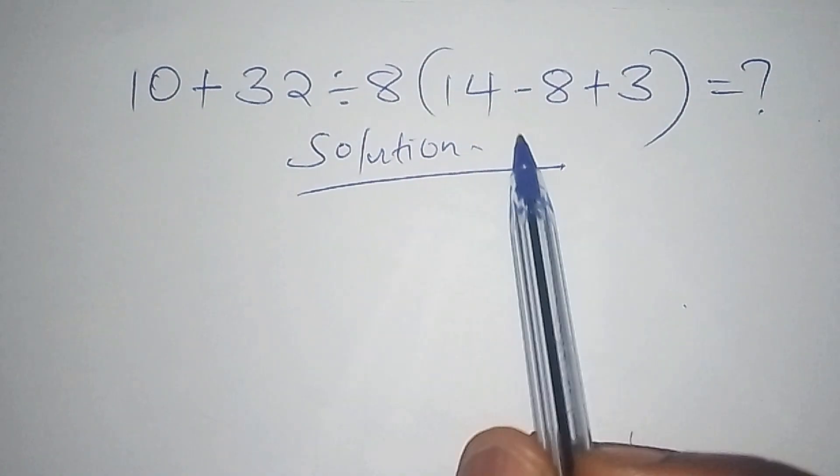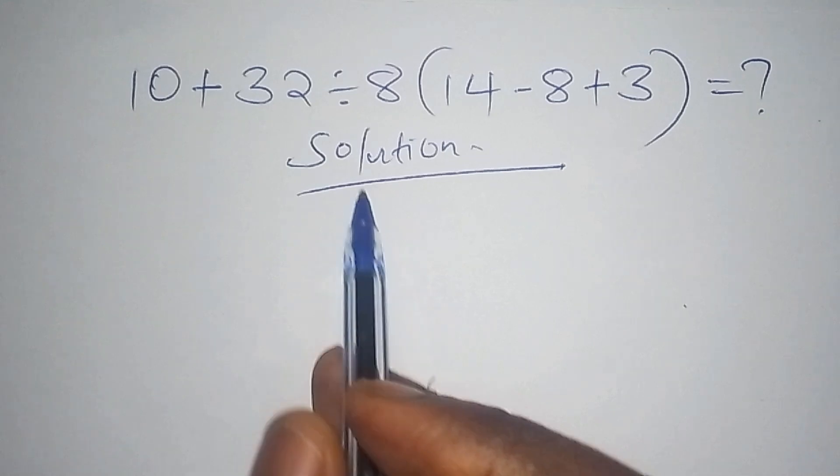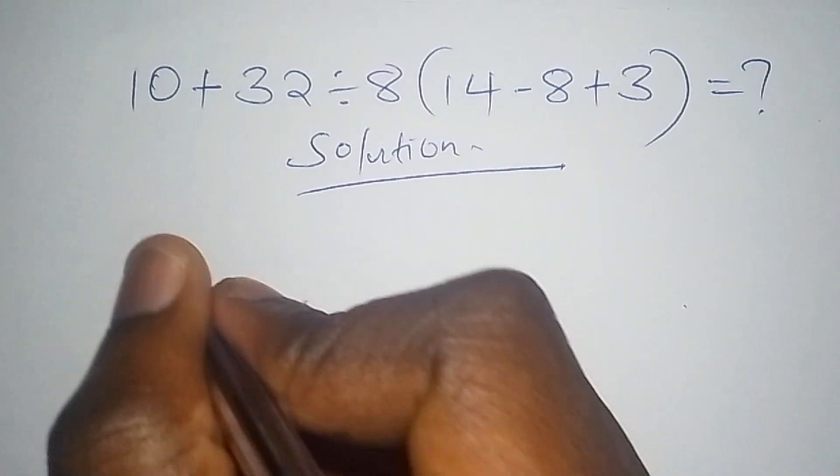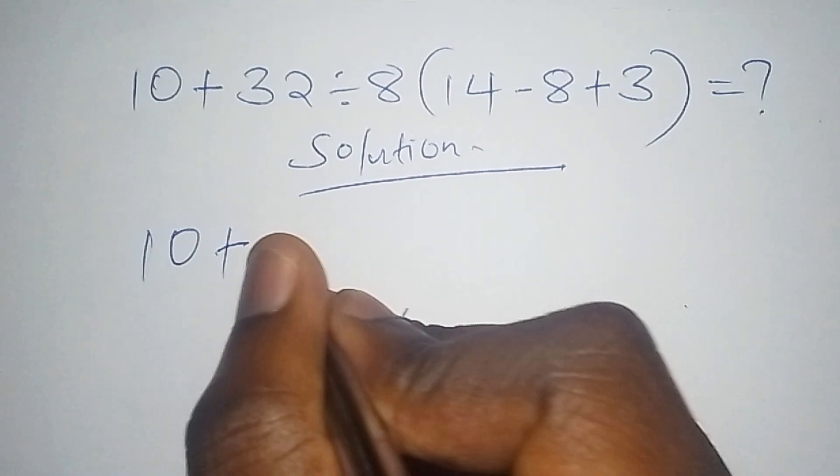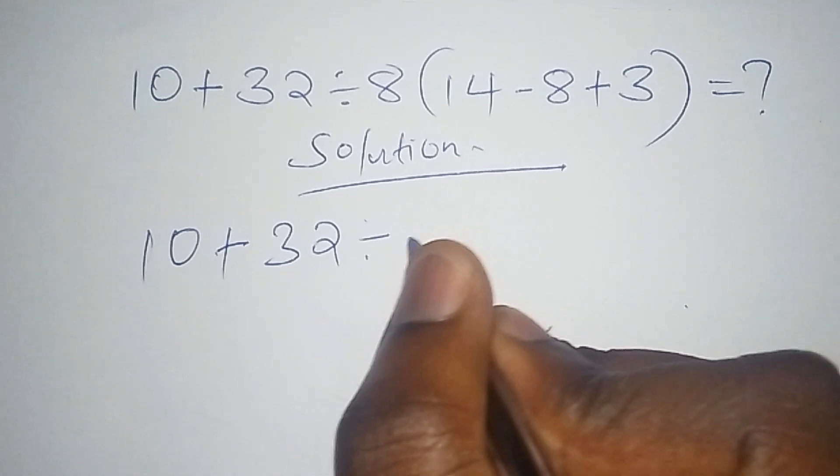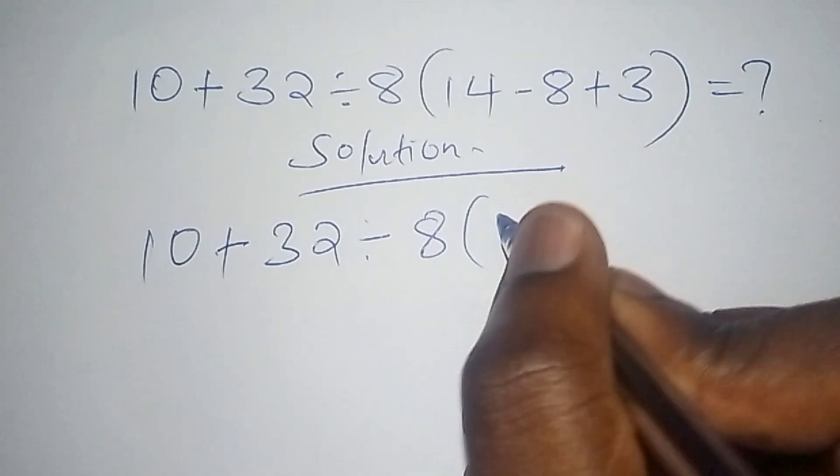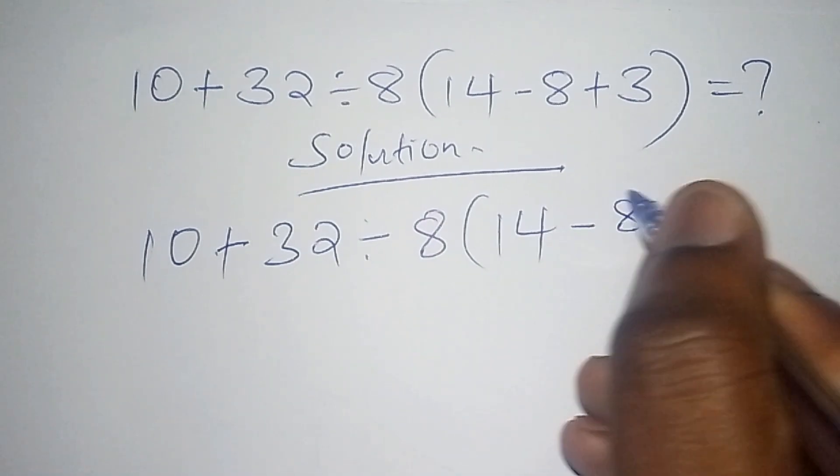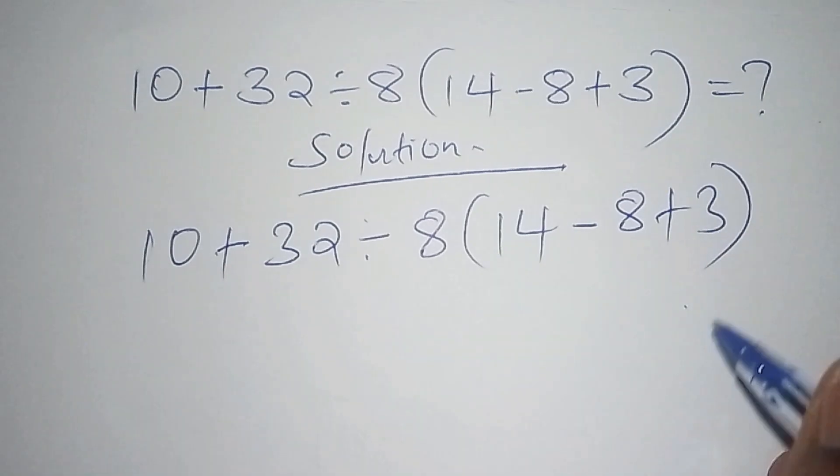If you know how to work it out, you can comment your answers below so that you can compare. So we have 10 plus 32 divided by 8 into bracket 14 minus 8 plus 3. So all these into bracket. So what do we do?